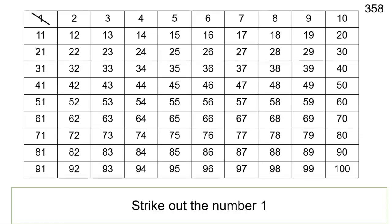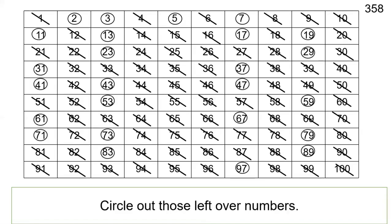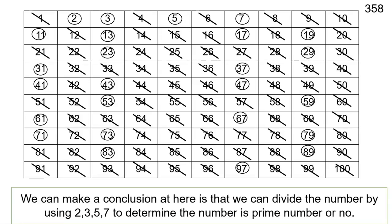Let's do an activity. Strike out the number one. Circle the number two and strike out those numbers that can be divisible by two. Circle the number three and strike out those numbers that can be divisible by three. Circle the number five and strike out those numbers that can be divisible by five. Circle the number seven and strike out those numbers that can be divisible by seven. Circle out those leftover numbers.